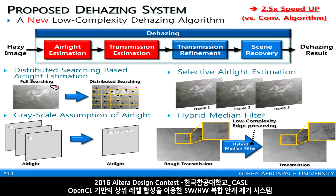트랜스미션 이스티메이션 과정에서 에어라이트는 3개의 RGB 컴포넌트로 이루어지는데, 각 컴포넌트의 값이 굉장히 비슷하다는 특성을 이용해 에어라이트가 그레이스케일한 컴포넌트를 가진다고 가정하였습니다. 그리고 마지막으로 트랜스미션 이스티메이션 과정에 로우 컴플렉시티와 엣지 프레저빙 특성을 가진 하이브리드 미디언 필터를 도입해 트랜스미션 리파인먼트 과정을 생략할 수 있었습니다. 이 네 가지 스킴을 통해 컨벤셔널 알고리즘 대비 2.5배의 스피드업을 이룰 수 있었습니다.